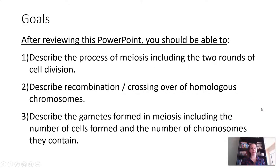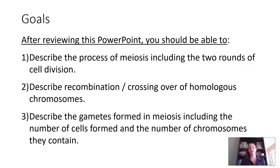Here are the goals for this lesson. After you go through this PowerPoint and watch the whole video, you should be able to: describe the process of meiosis including the two rounds of cell division; describe the process of recombination, also known as crossing over of homologous chromosomes; and describe the gametes formed as a result of meiosis, including the number of cells and chromosomes each contains.